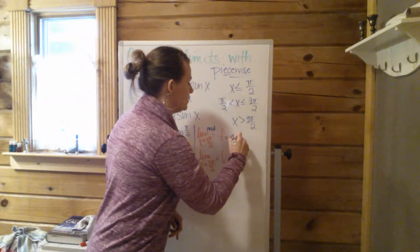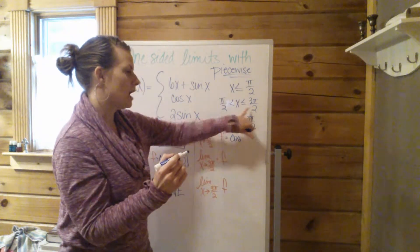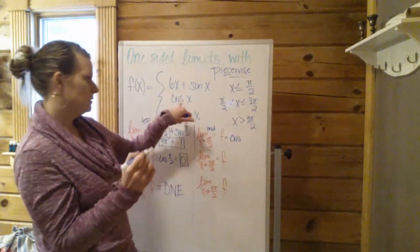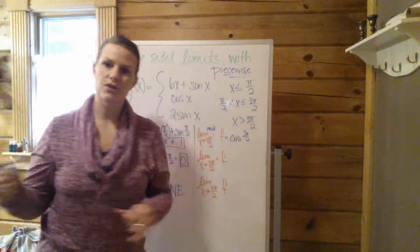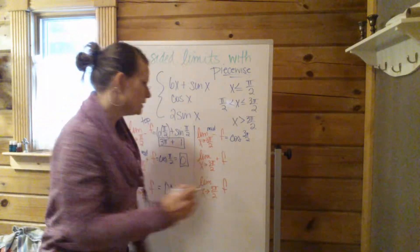So this is going to equal the cosine. Now we're plugging 3π/2 in here. Cosine of 3π/2. 0.